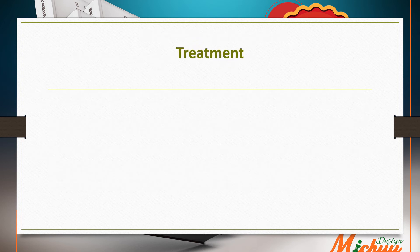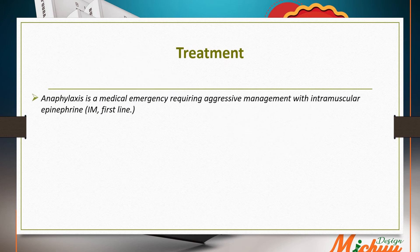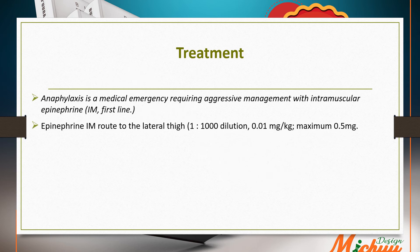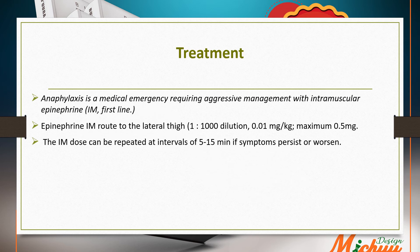Anaphylaxis is a medical emergency requiring aggressive management with intramuscular epinephrine as the first-line treatment. The IM route is to the lateral thigh using a 1:1,000 dilution at 0.01 mg/kg, with a maximum of 0.5 mg. The dose can be repeated at intervals of 5 to 15 minutes if symptoms persist or worsen.